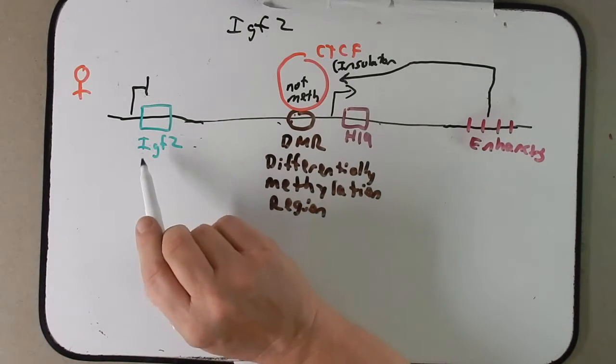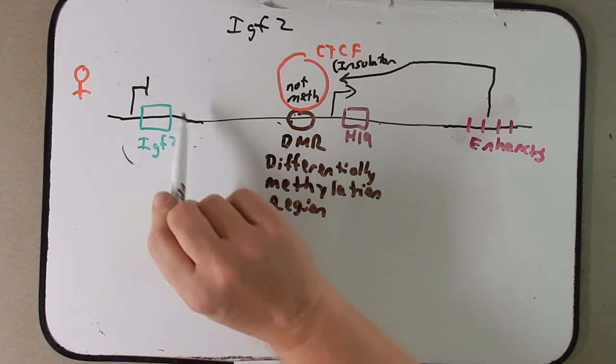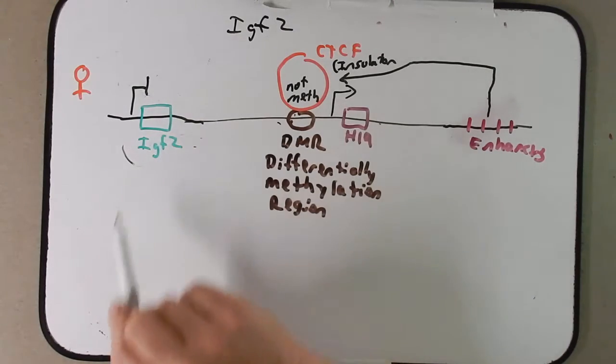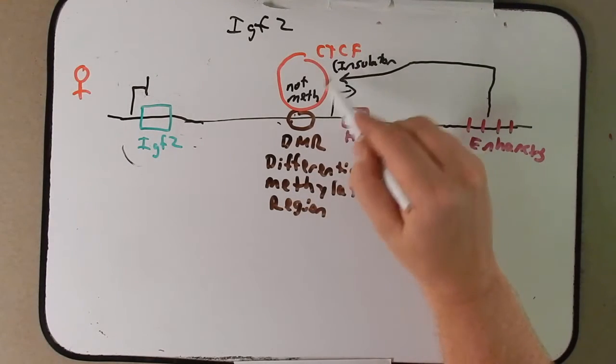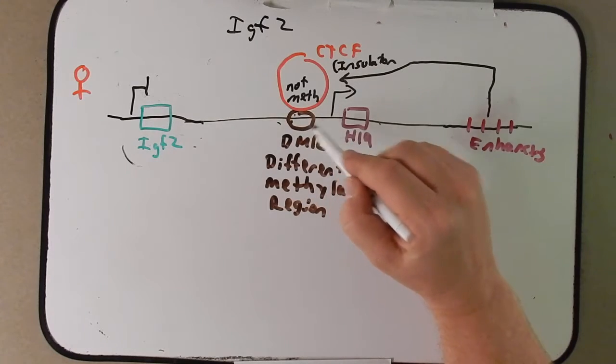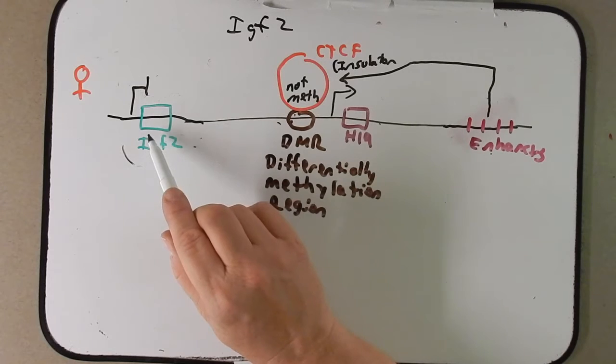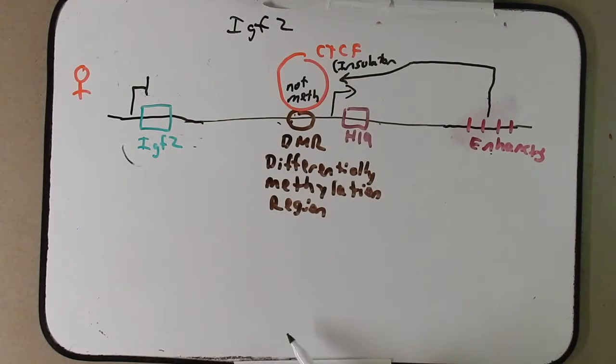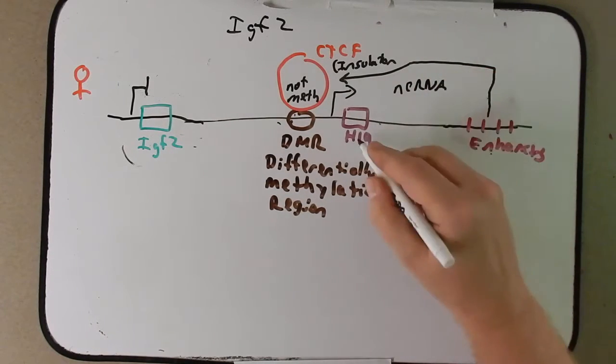It cannot enhance the expression of IGF2. Now we'll talk in a moment on the next board, I believe, about how we're going to further regulate IGF2. So this is just one level here, this is just preventing the enhancement of the expression. CTCF binds to this unmethylated DMR, prevents these enhancers from helping express IGF2, and allows it to only affect H19. So we're constantly going to be making this non-coding RNA from H19.